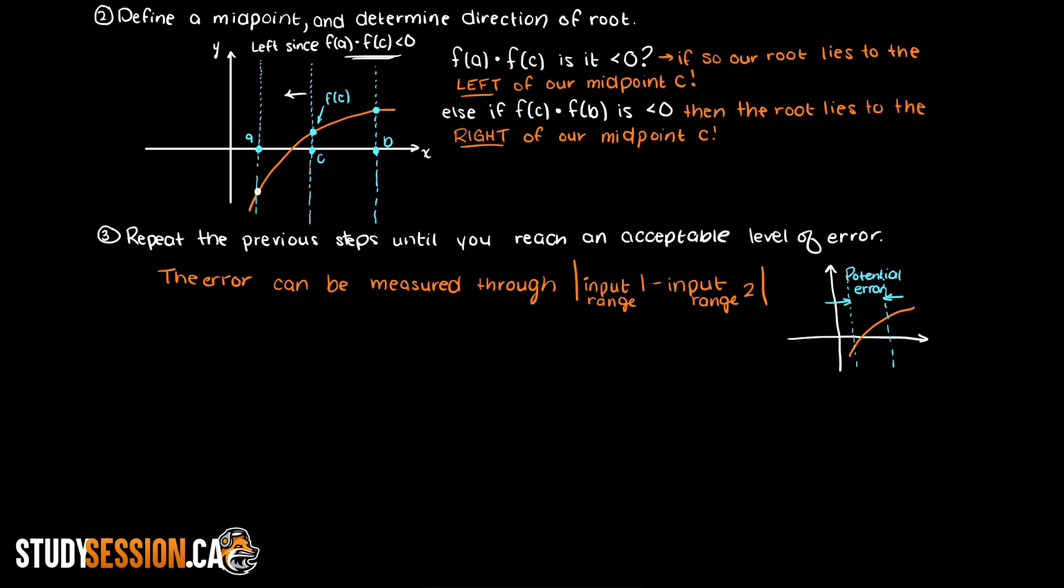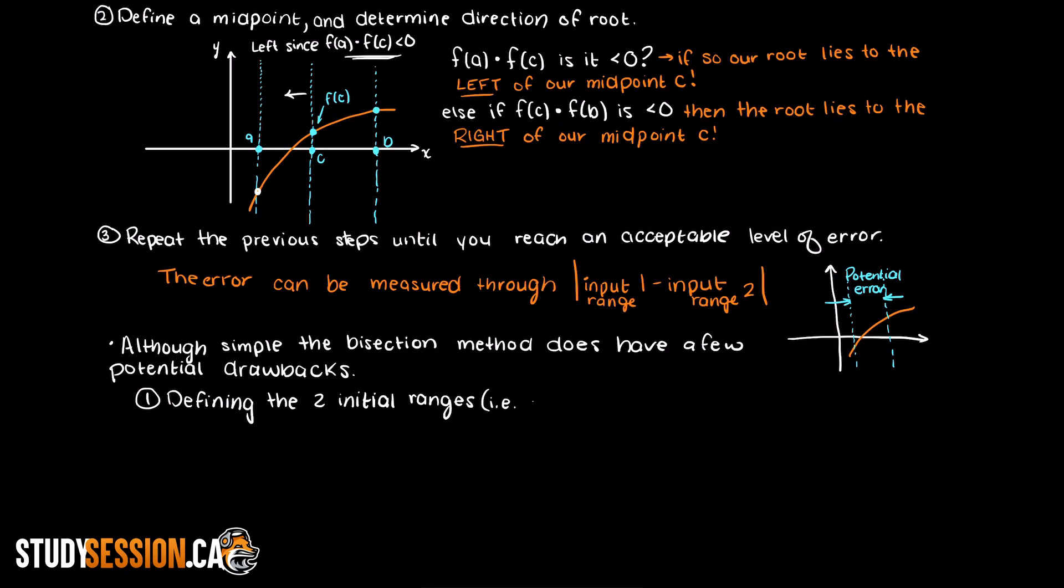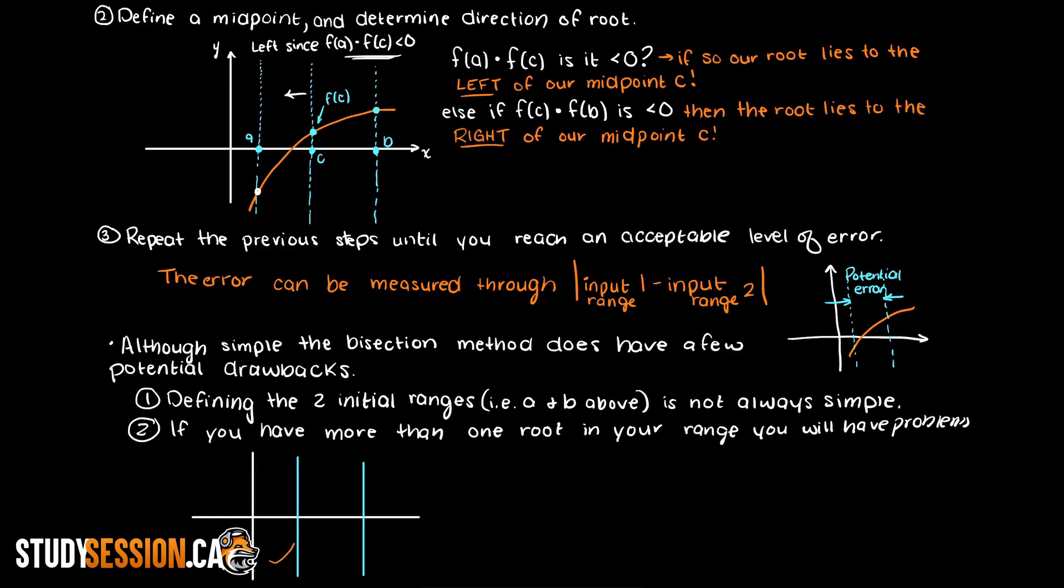Although simple, the bisection method does have a few drawbacks, like all closed method non-linear solvers. As you can imagine, defining the two initial ranges for which there is a root inside is not always simple. Additionally, you could have two roots within a single range, and this will cause you problems as you cannot converge to a single root when two exist.